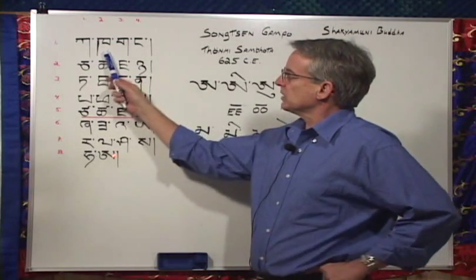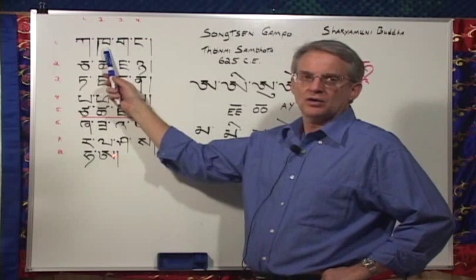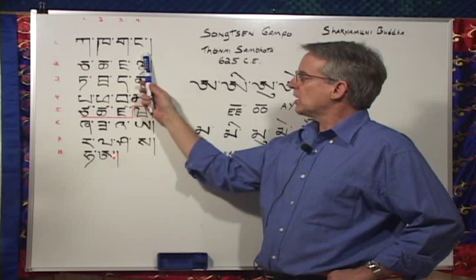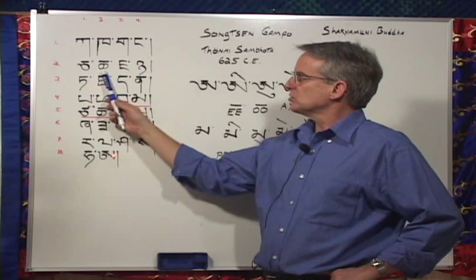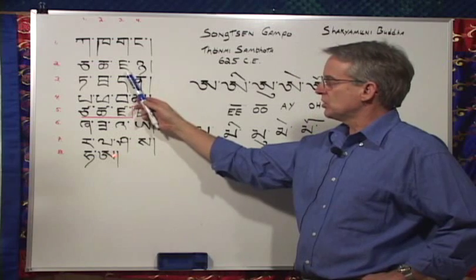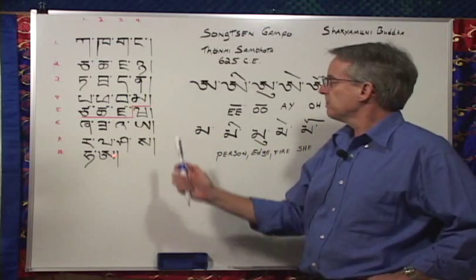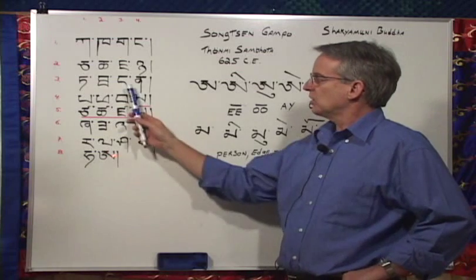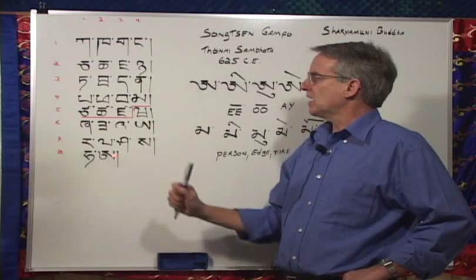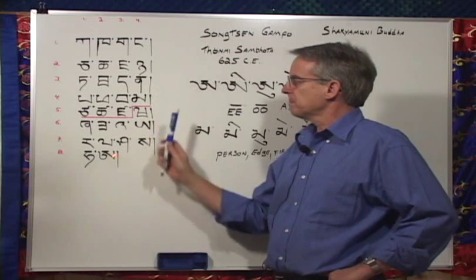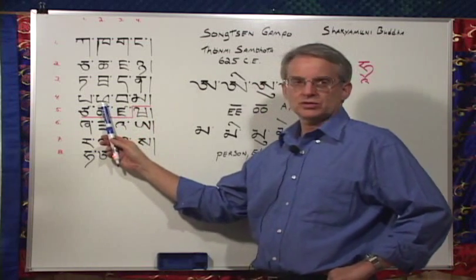So for instance, the second letter in the alphabet, ka, means mouth. Na means I or me. Cha means part. Ja is tea. Nya is fish. Da is now. Na is if. Pa is father.